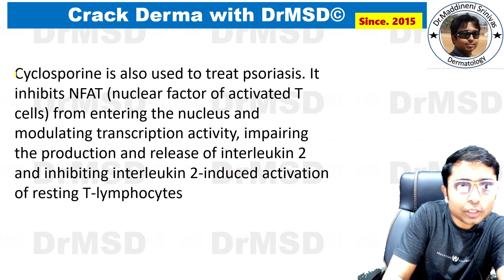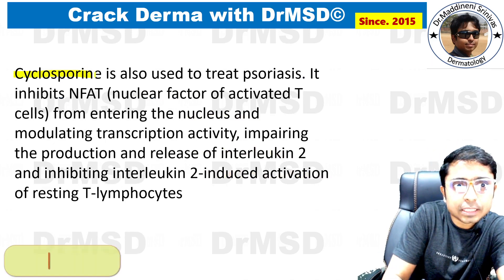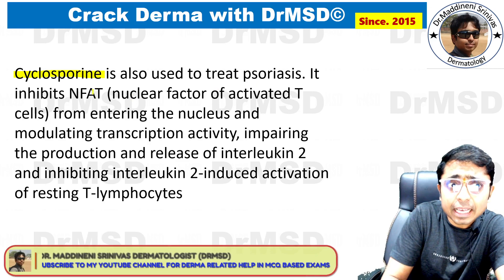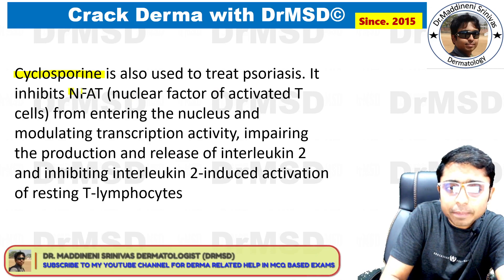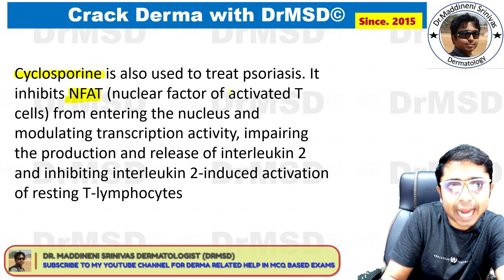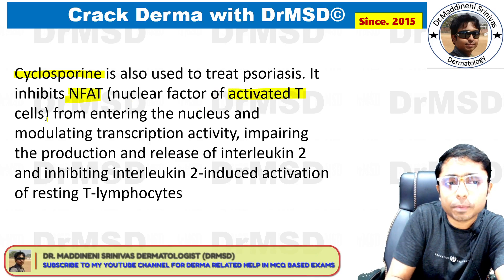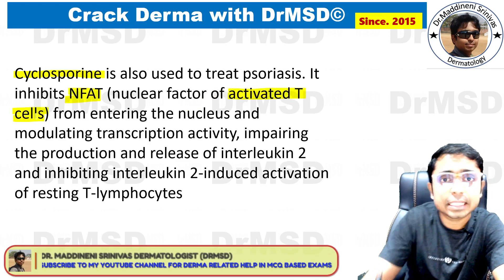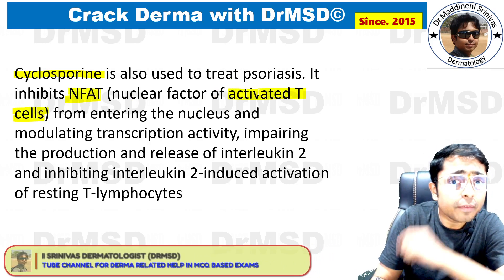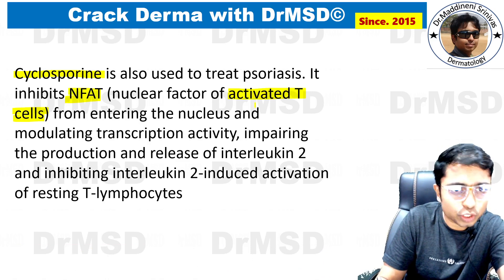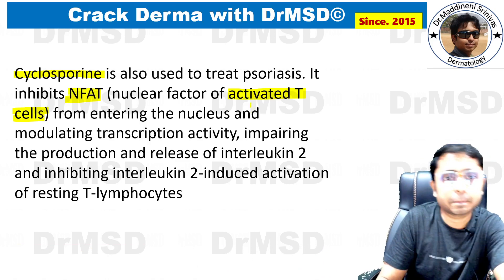Coming to the next option, cyclosporine inhibits NF-AT, which stands for nuclear factor for activated T cells. Psoriasis is a condition in which there is excessive activation of T cells, which is why cyclosporine is effective.